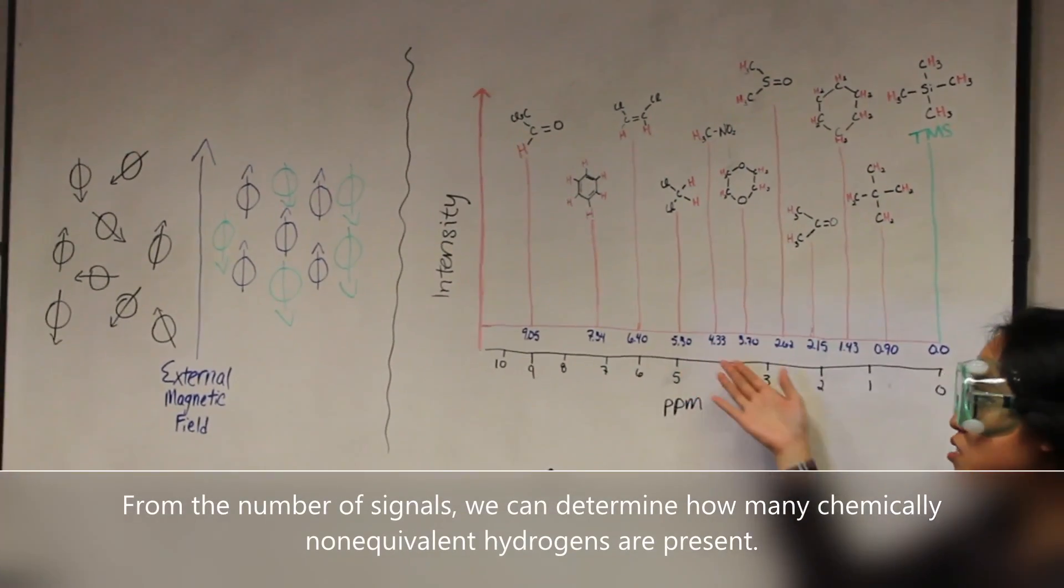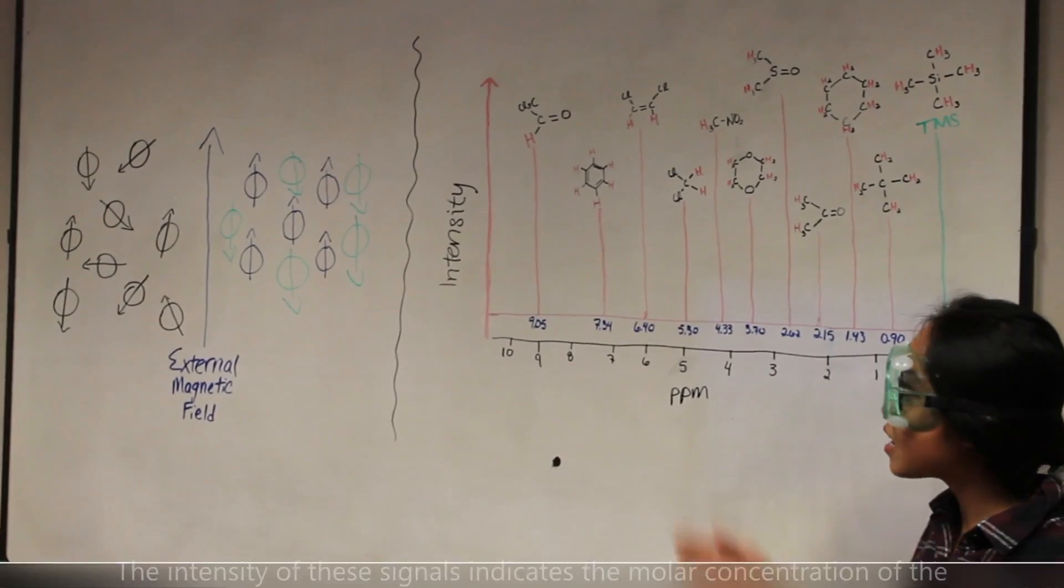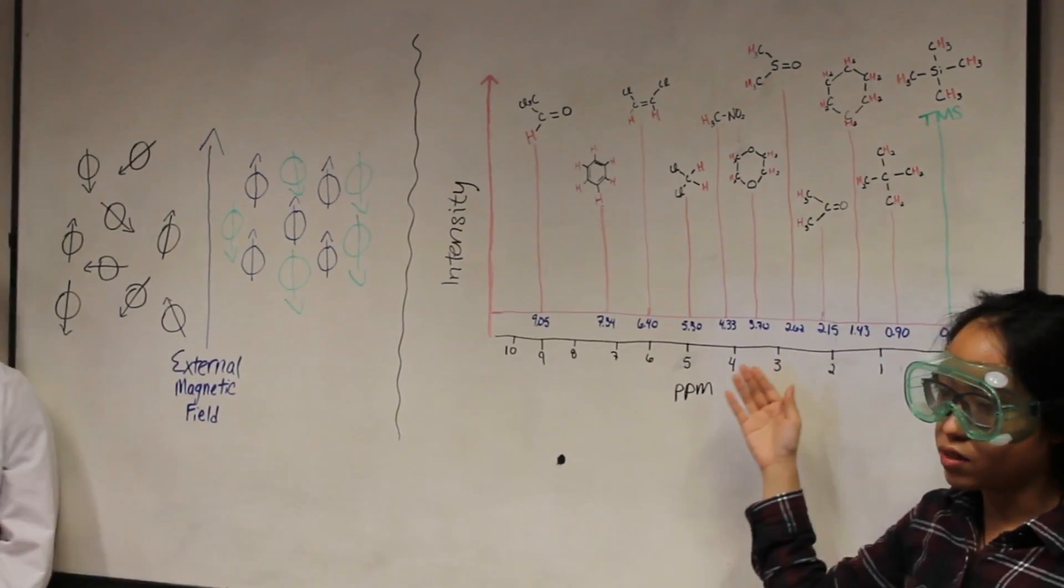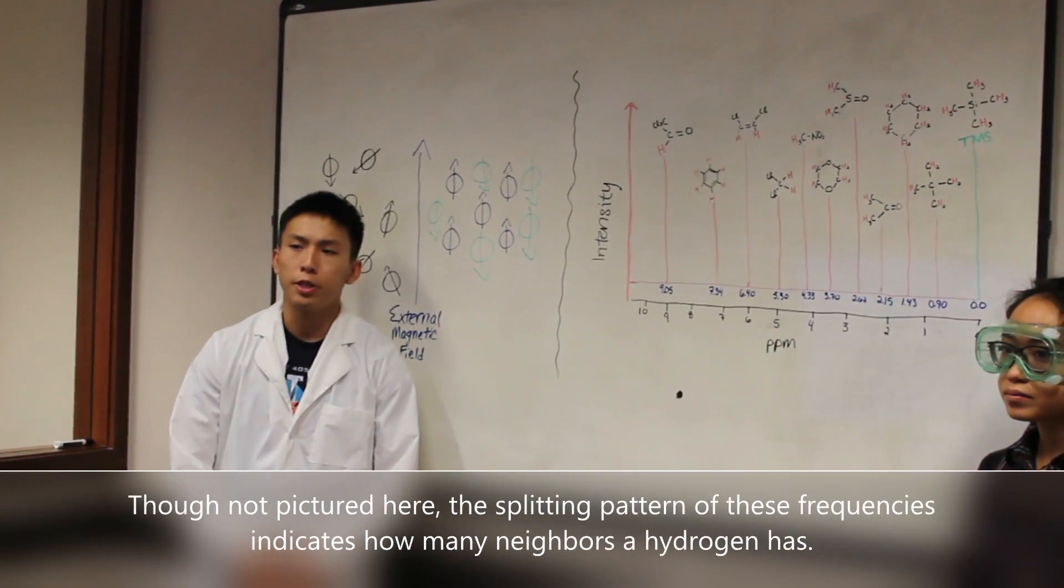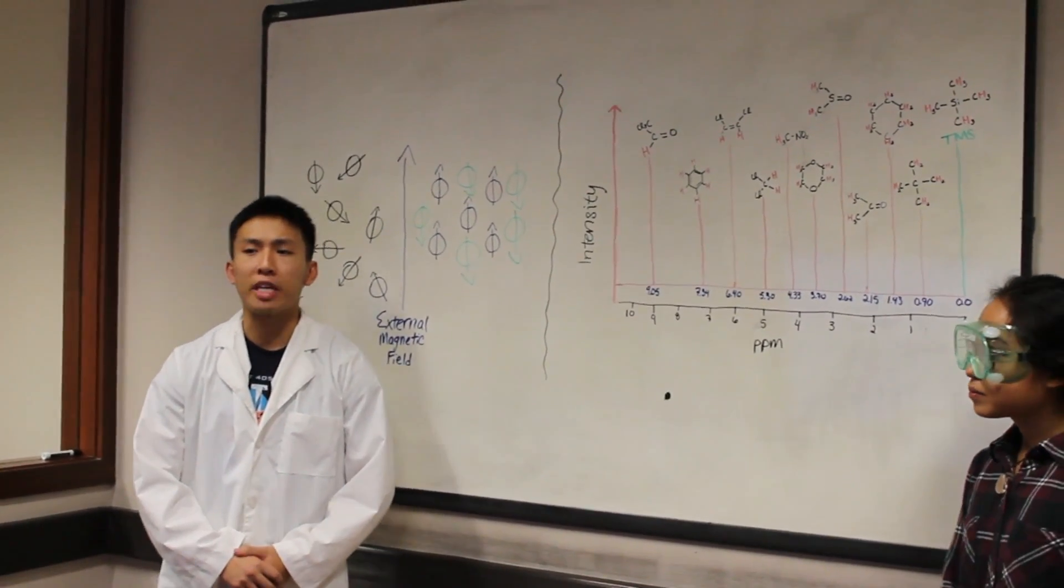From the number of signals, we can determine how many chemically non-equivalent hydrogens are present. The intensity of these signals indicates the molar concentration of the sample. Though not pictured here, the splitting patterns of these frequencies indicates how many neighbors a hydrogen has.